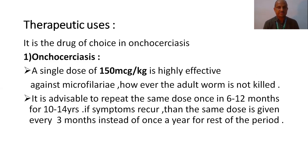Coming to the therapeutic uses: Ivermectin is the drug of choice in onchocerciasis. It is given as a single dose of 150 mcg per kg, which is highly effective against microfilaria. However, the adult form is not killed. Therefore, we give the same dose once every 6 to 12 months for 10 to 14 years. If symptoms recur, then the same dose is given every 3 months instead of every 6 to 12 months, to kill the adult worms.